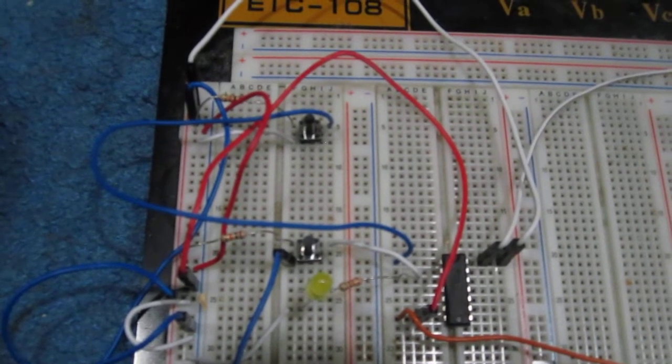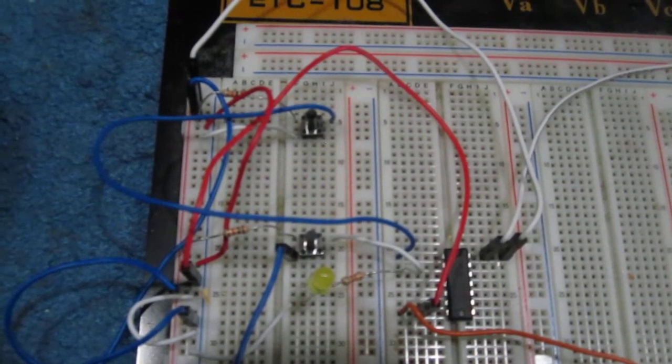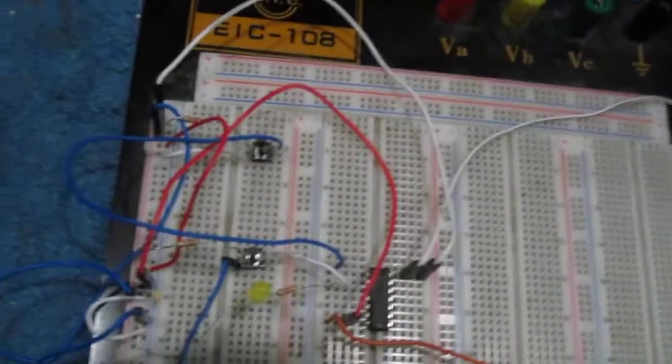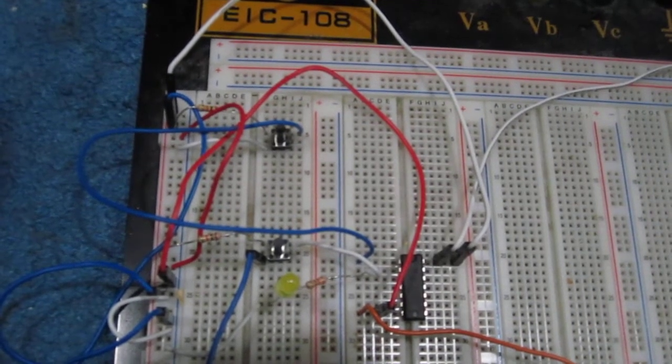In NAND gate logic, if any of the inputs are low—either one or both of them—then the output will be high.